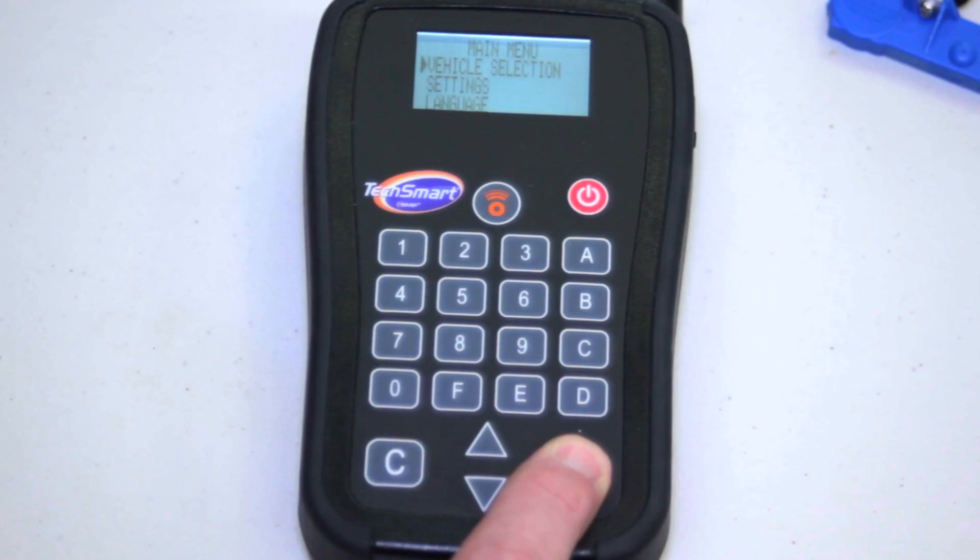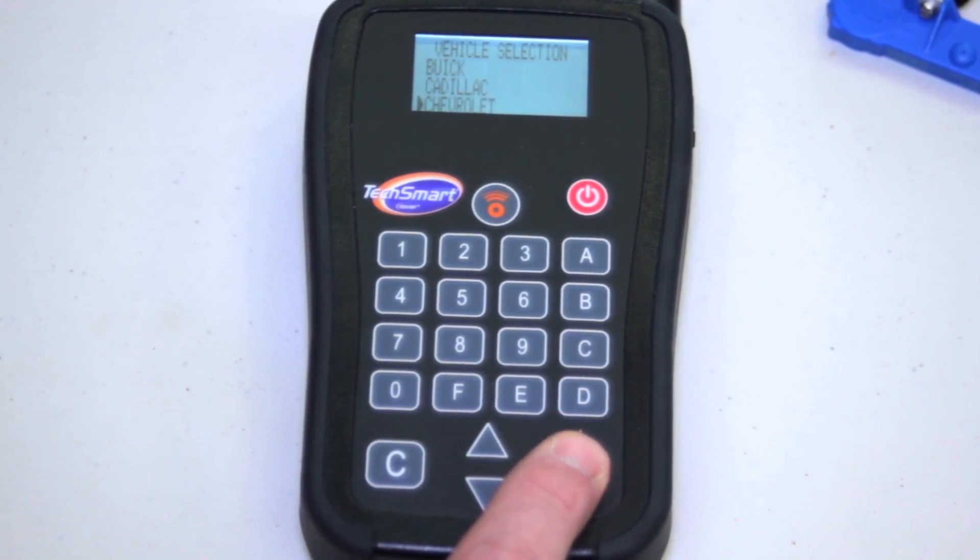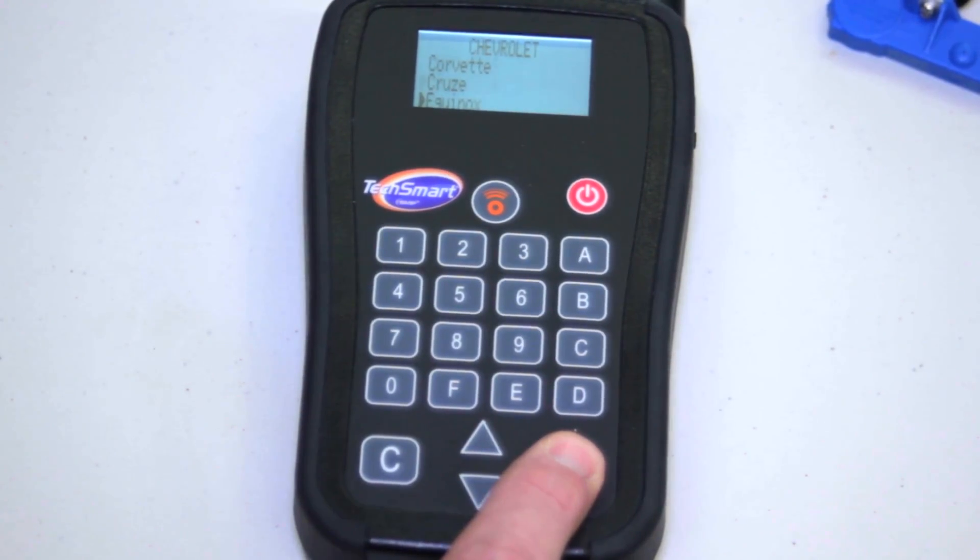I'm going to select the vehicle, select Chevrolet, select Equinox, and pick model year between 2010 and 2014.